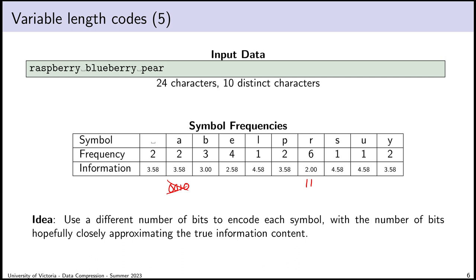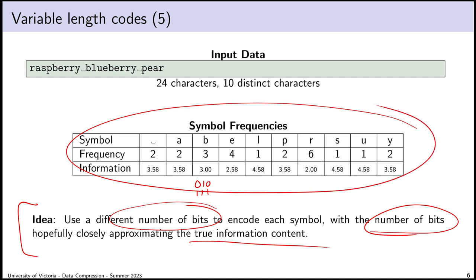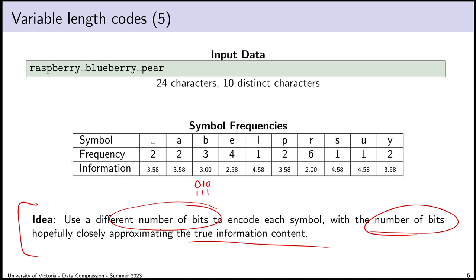I'm willing to concede I probably can't achieve 73.77 bits — that's impossible — but I want to get to around 76 or 80 bits. The key point is: I don't actually care what specific bit encoding we use. I just care about the length of the bit encoding. I want to say things like 'I want R to get two bits and S to get five bits.' The specific bit sequence doesn't matter — only the length matters.